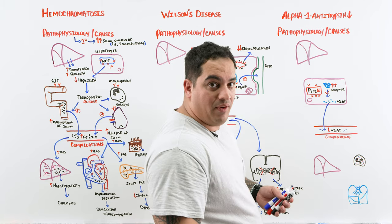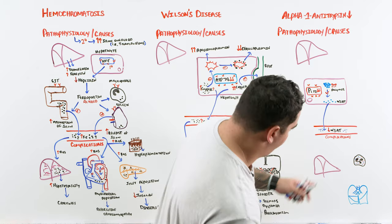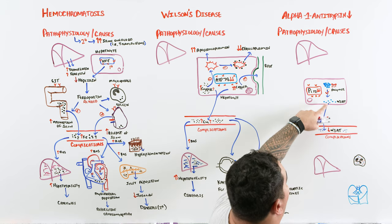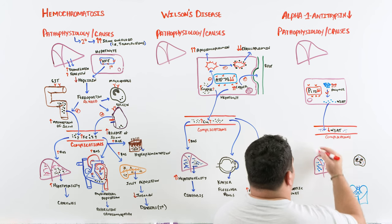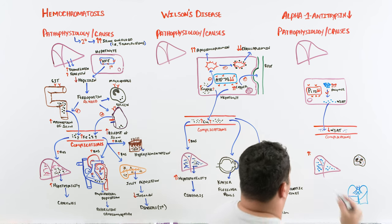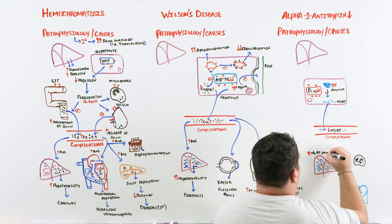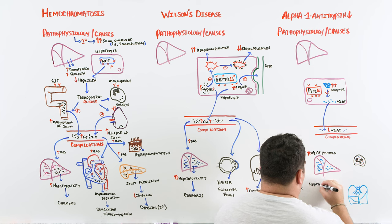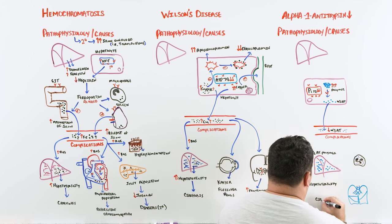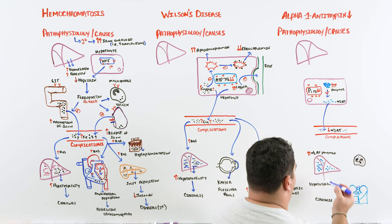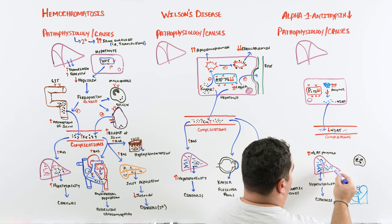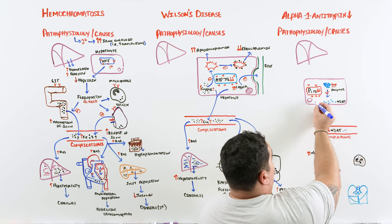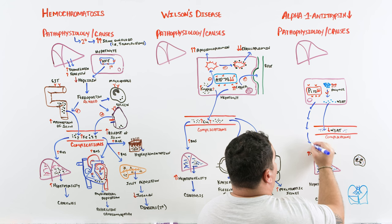These weird alpha-1 antitrypsin polymers sitting inside the liver cells cause destruction of tissue over time. The accumulation of alpha-1 antitrypsin polymer leads to hepatotoxicity, and from chronic inflammation these patients start to experience portal hypertension and decreasing liver function due to fibrosis and nodular regeneration. The polymer stays inside the hepatocytes, similar to how copper stays inside and causes damage.